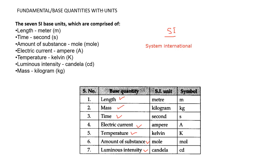For example, if I want to measure length I can use a ruler and directly measure it. If I want to measure mass I can place the object on a balance. If I want to measure time I can use a stopwatch or clock. Because these quantities can be measured directly, they are considered fundamental or base quantities.